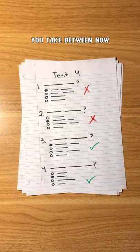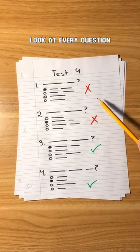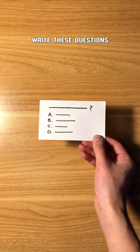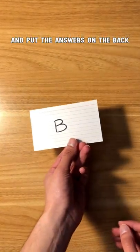For every test you take between now and the end of the school year, look at every question you get wrong. Write these questions on flashcards and put the answers on the back.